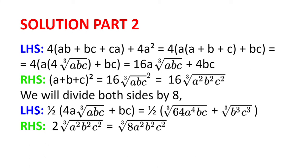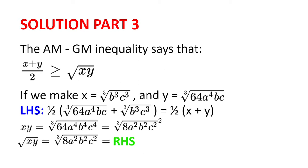This is the point where we will use the AM-GM inequality. If you are still unsure, have a think about what these terms could be. The AM-GM inequality says that X plus Y divided by 2 is greater or equal to the square root of X multiplied by Y. If we make X the cubic root of B cubed C cubed and Y the cubic root of 64 multiplied by A to the power of 4 multiplied by B multiplied by C, we get on the left-hand side half of X plus Y, and on the right-hand side the square root of XY.